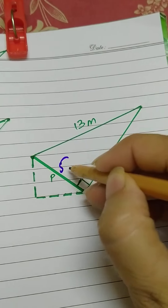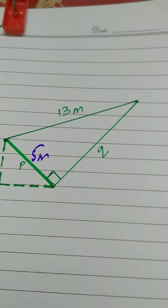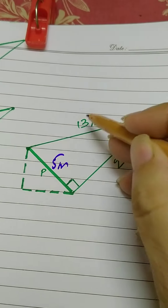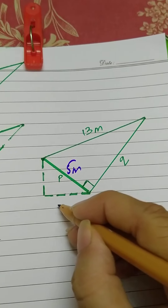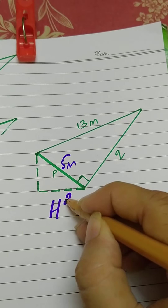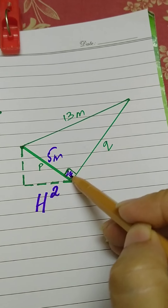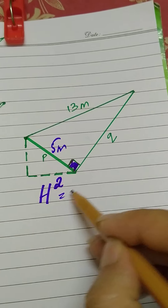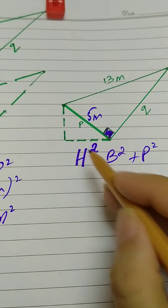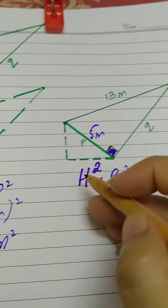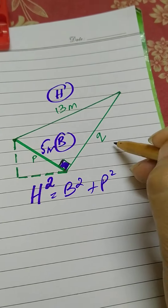Now we can apply Pythagoras theorem to the bigger right-angle triangle, because we know p = 5 meters, so two sides are now given and the third (q) is missing. Pythagoras theorem states: hypotenuse squared equals base squared plus perpendicular squared. In this larger triangle, we identify the hypotenuse, base, and perpendicular accordingly.